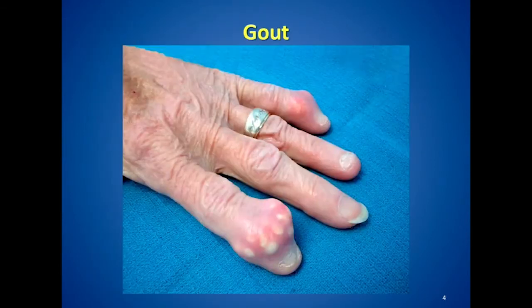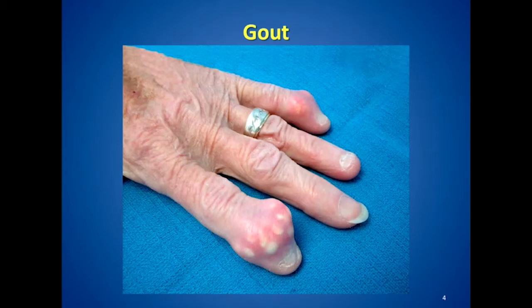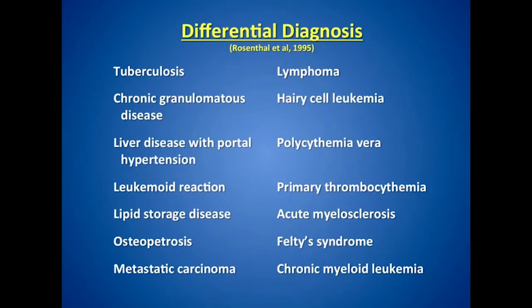This slide shows a complication we've seen recently in our clinic — those nodules on the fingers are tophaceous gout. If you have gout and an underlying myeloproliferative disorder, it is really a consequence of the underlying disease. Many patients can present with myelofibrosis that can be attributed to a myeloproliferative disorder.